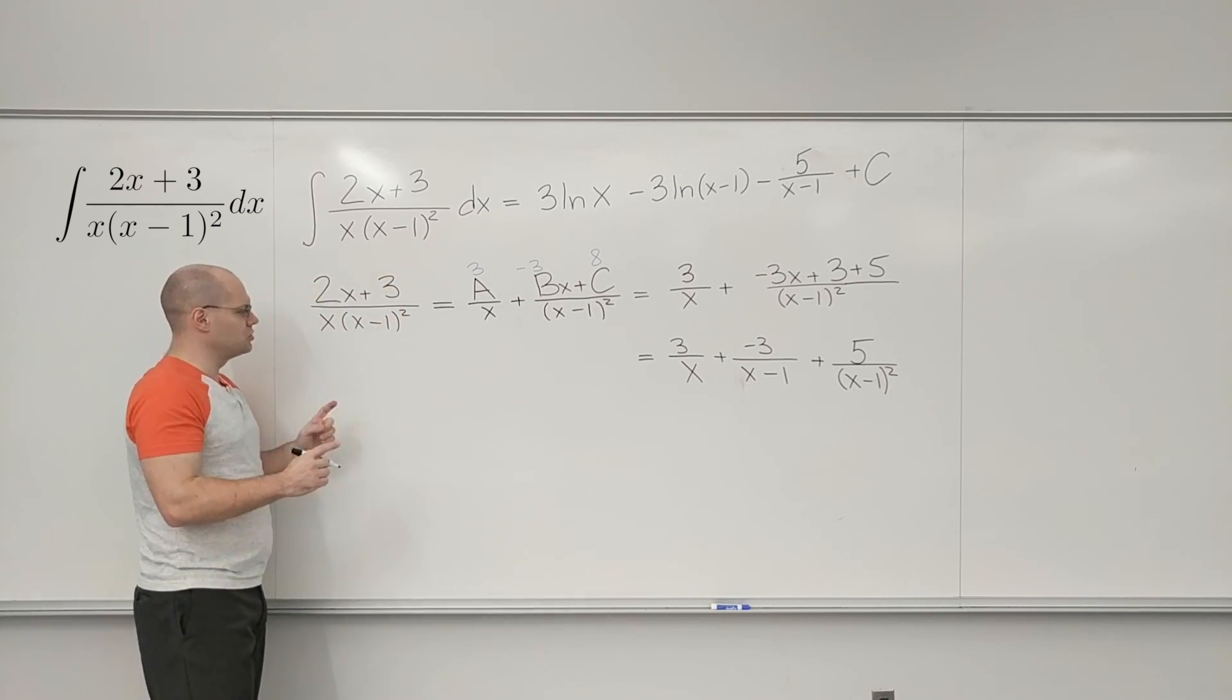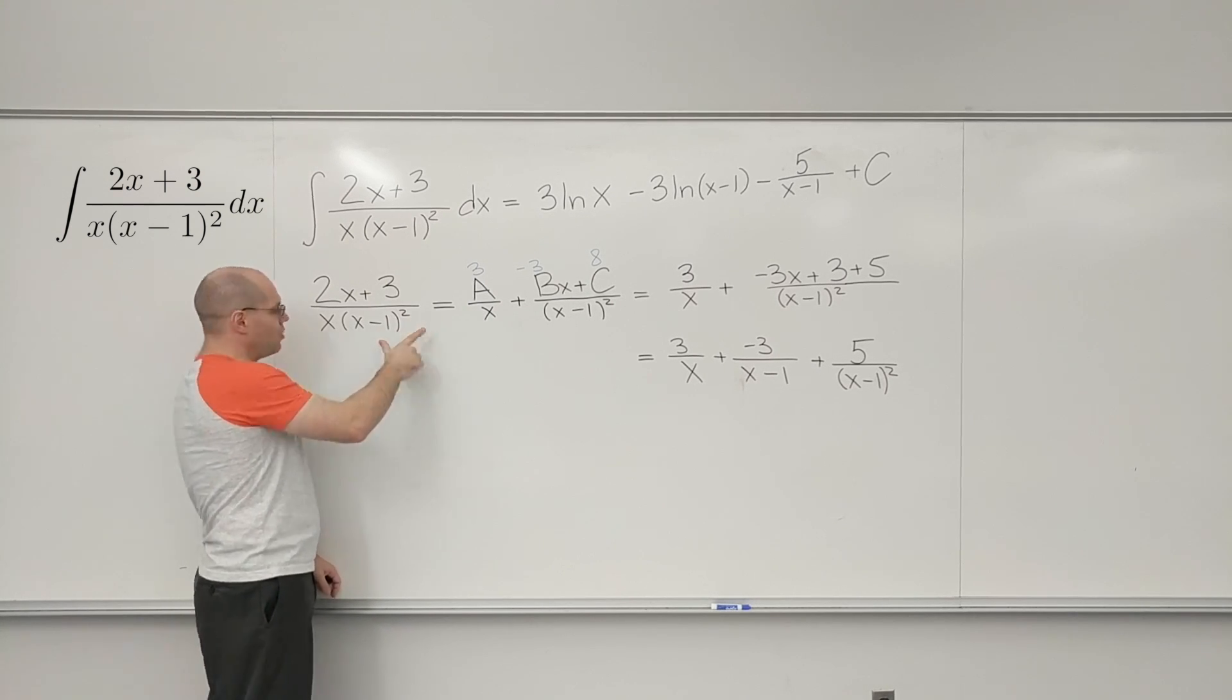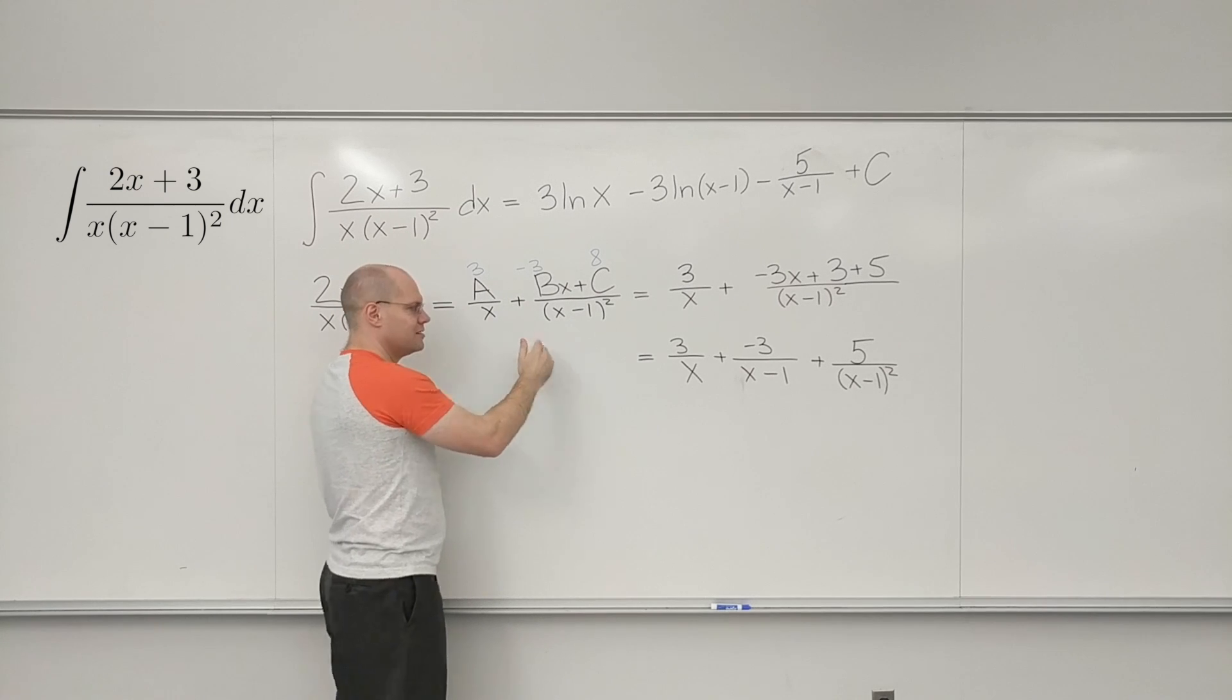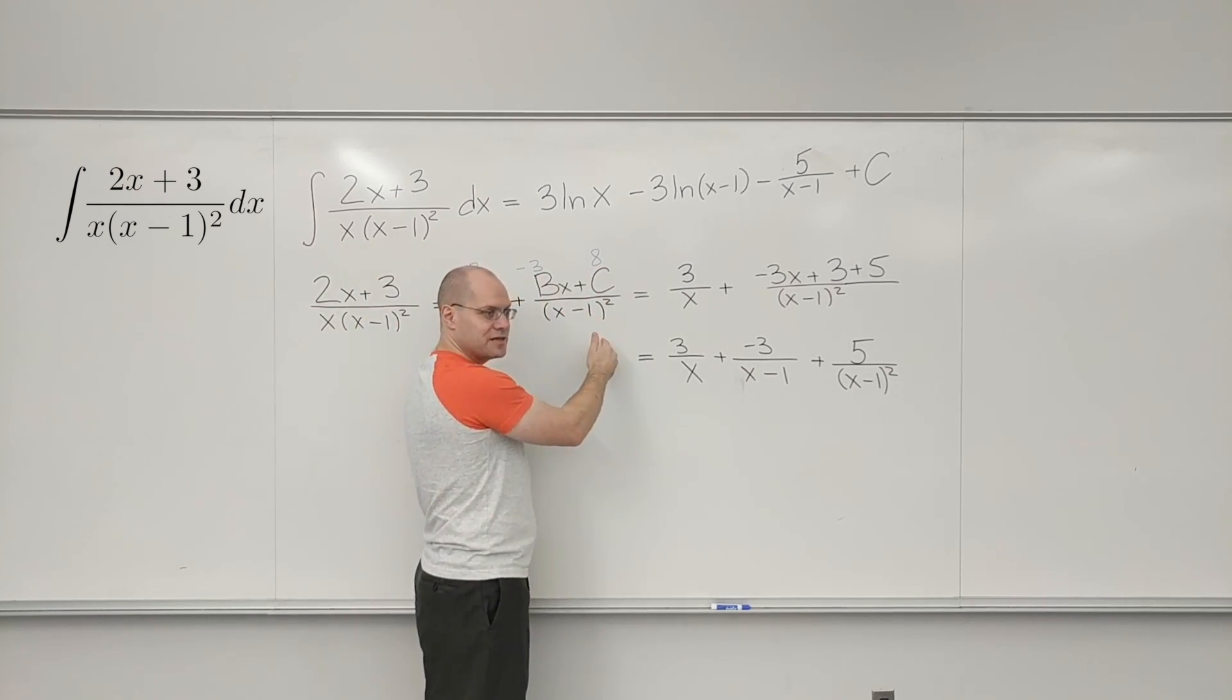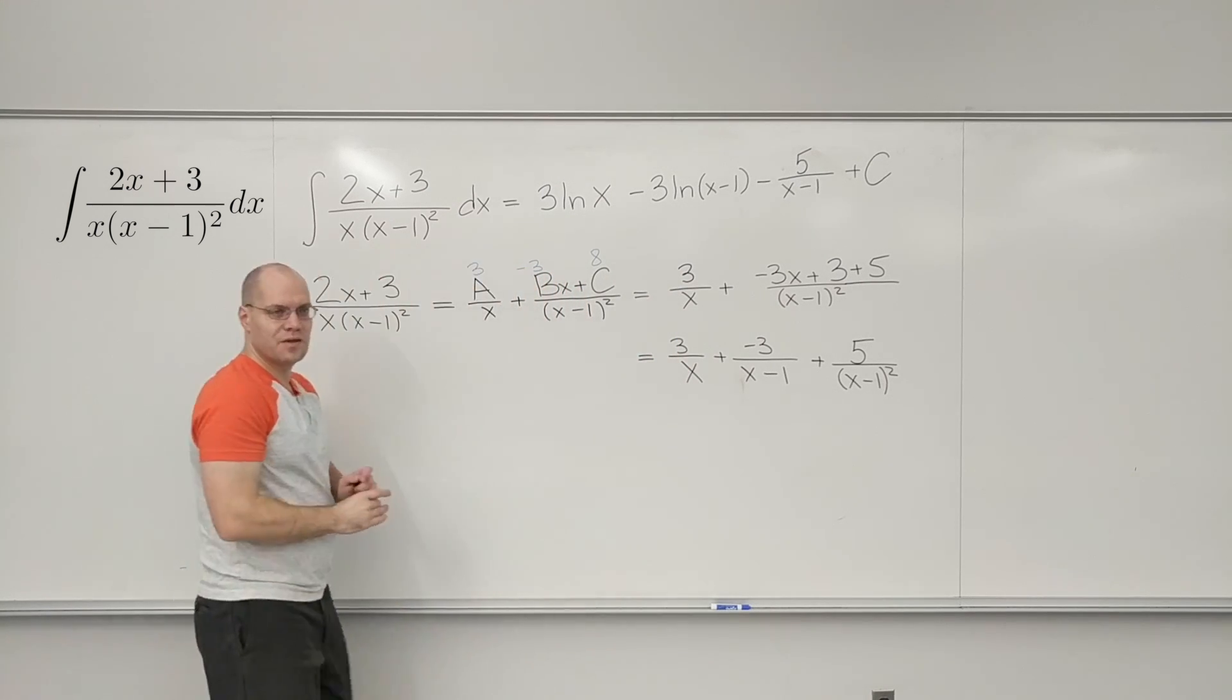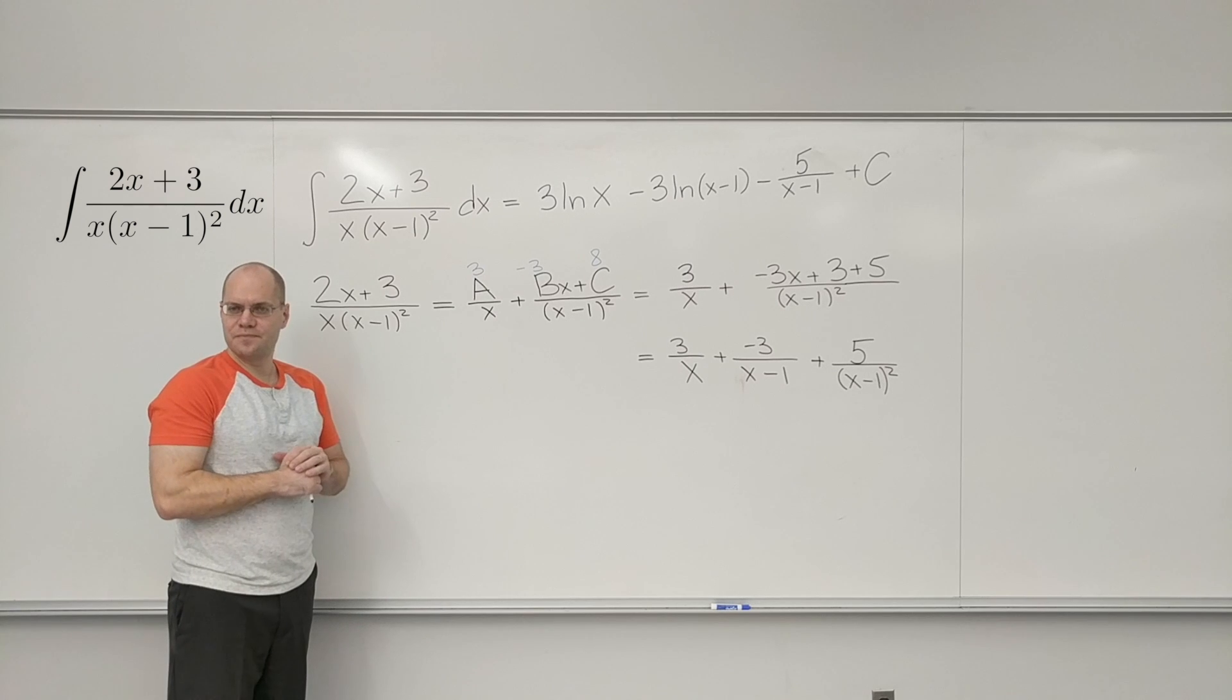So if that's what you do when the factor appears twice, or even more times, if this was cubed, then going back to the original way of doing this, you would have one term over x minus 1, plus another constant over x minus 1 squared, plus another constant over x minus 1 cubed, and that way you could handle anything that you encounter in the denominator.